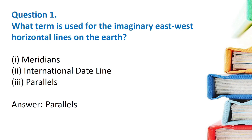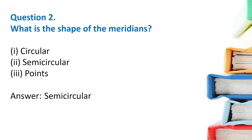Question 1: What term is used for the imaginary east-west horizontal lines on the earth? There are three options — meridians, international date line, and parallels. The answer is parallels. Question 2: What is the shape of a meridian?